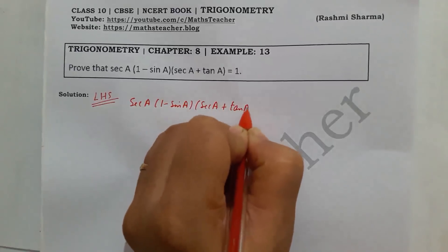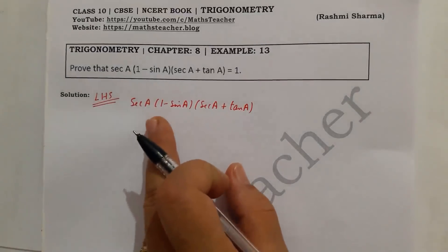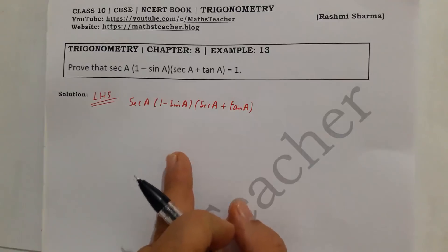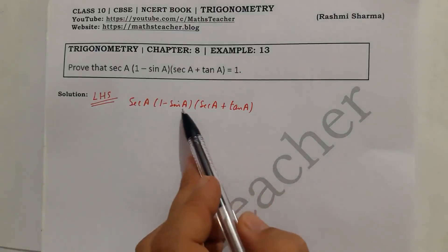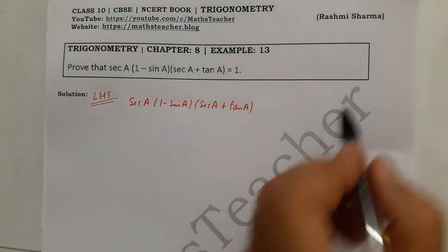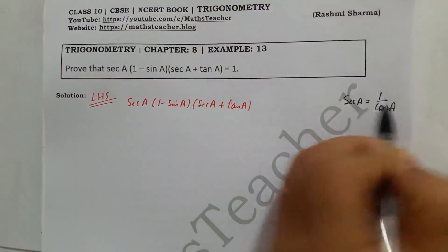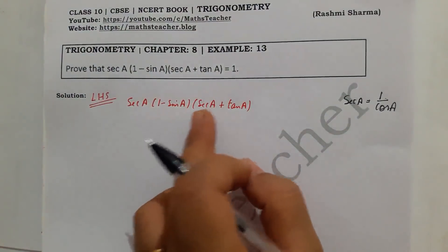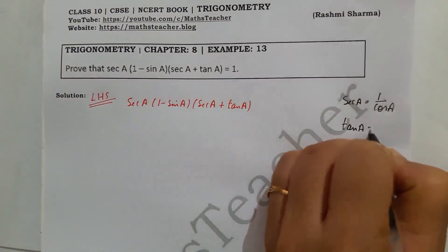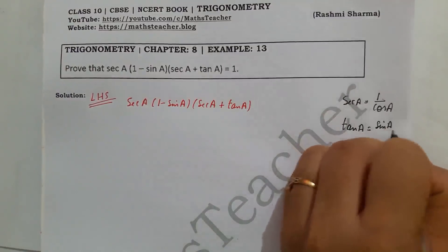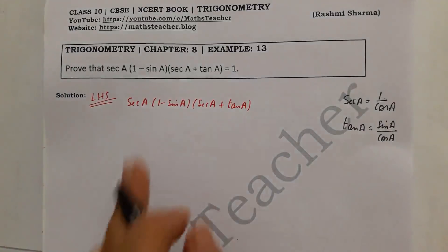This is the easiest method. You have to solve all the problems using identities. Here we know that sec a is 1 by cos a, and tan a is sin a divided by cos a. So we will change sec a to 1 by cos a, and tan a to sin a over cos a.